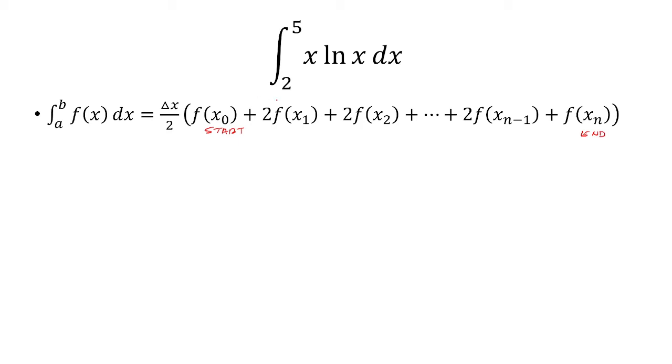You basically take x₀ plus delta x every time. This will be x₀ plus 2 delta x, and so on, up until you get to x_n.